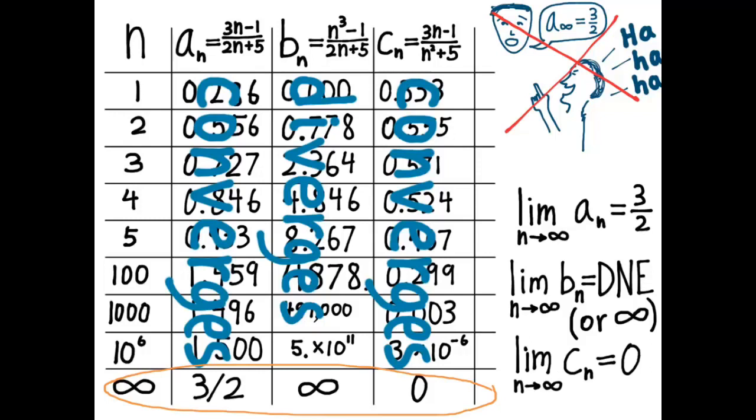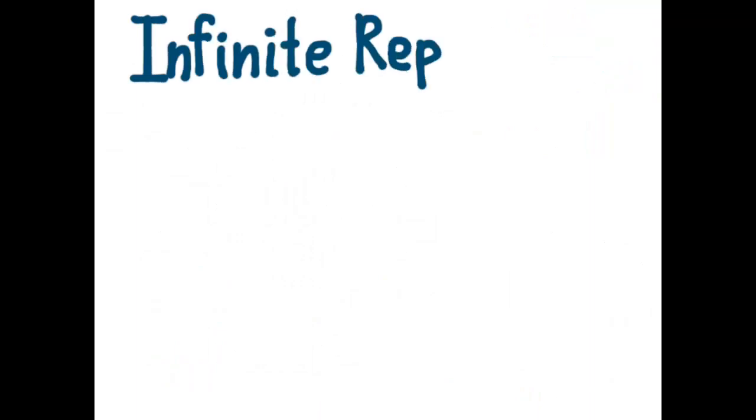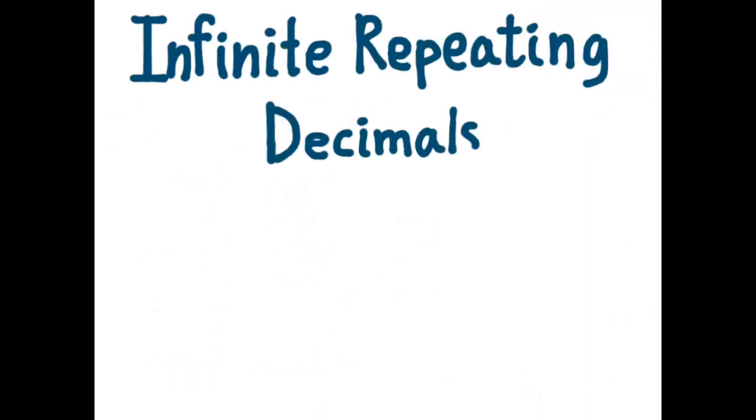Now, you may have seen things like this before, and you may have a good intuitive understanding of what it means for a sequence to have a limiting value. I want you to have a more precise mathematical idea about it. And by the way, we have used infinite sequences in the past. Maybe you didn't notice it. When you talked about infinite repeating decimals, you were actually talking about a calculus concept without knowing it. It's a limit of an infinite sequence.